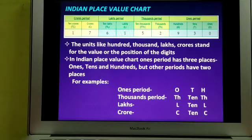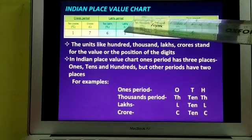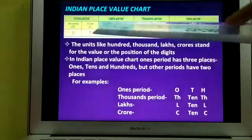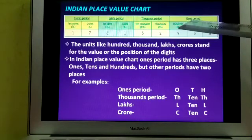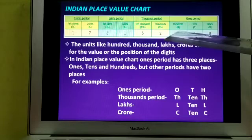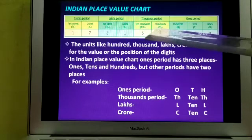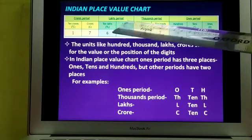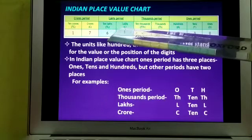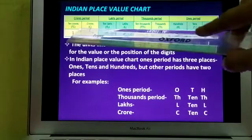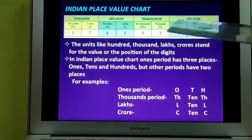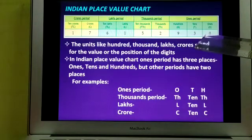Now, what do you mean by periods? A number in standard form is separated into groups of two digits or three digits using commas - this is called a period. Here you see the Indian place value chart and these are the periods of the Indian place value system. The ones period has three places: ones, tens, and hundreds. The thousands period has two places: thousands and ten thousands. The lakhs period has two places: lakhs and ten lakhs. The crores period also has two places: crores and ten crores. Only the ones period has three places.